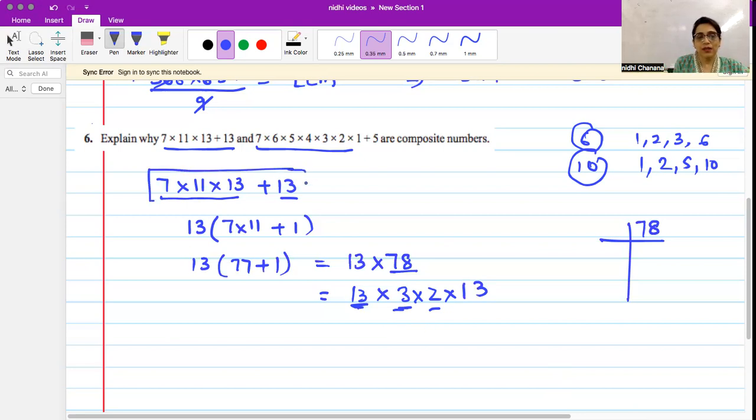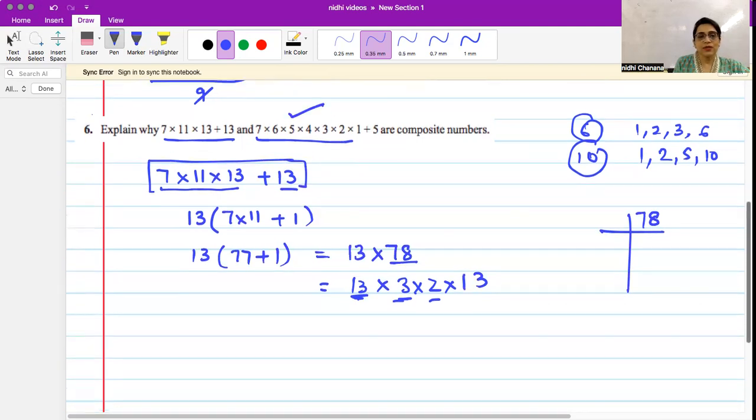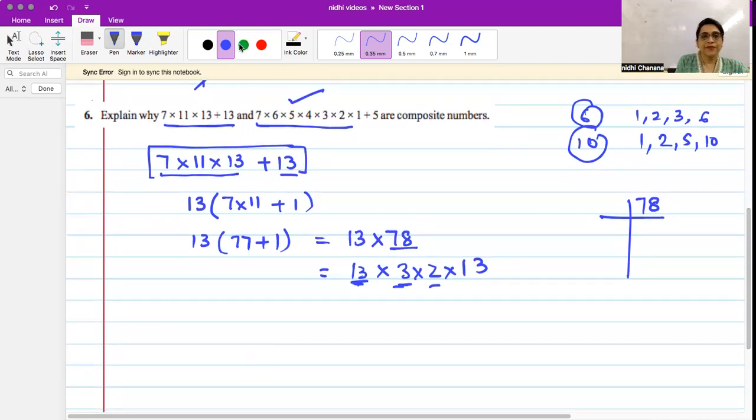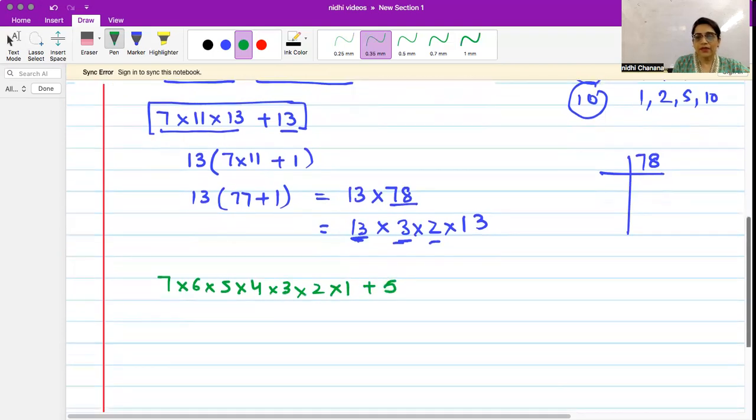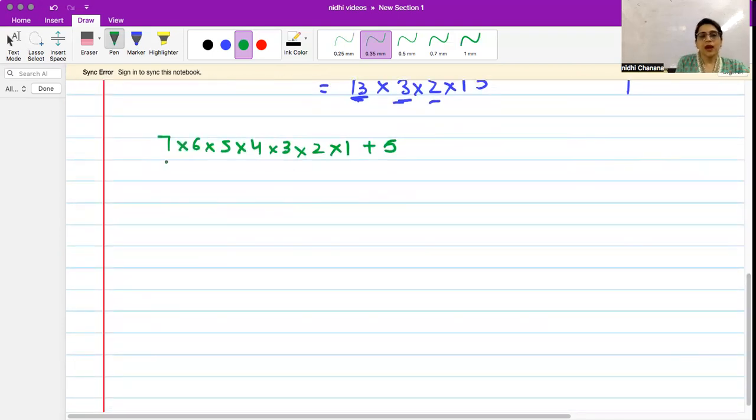So this is a composite number. Now let's move to the next number, which is 7 × 6 × 5 × 4 × 3 × 2 × 1 + 5. Let's check: this number and this number both have 5 as common, so what's left inside the bracket is 7 × 6 × 4 × 3 × 2 × 1 + 1, which equals 5(42 × 24 + 1).